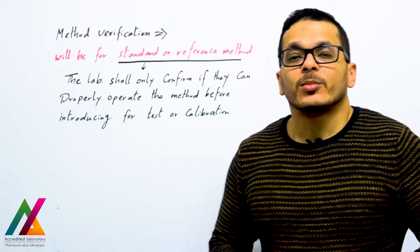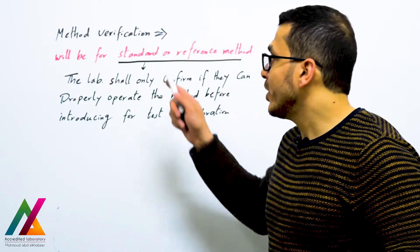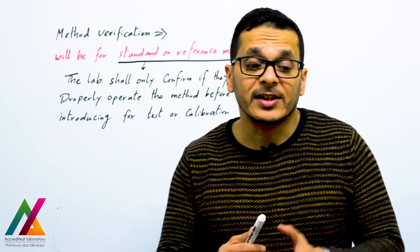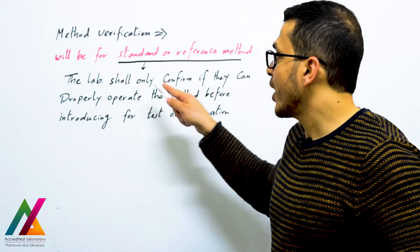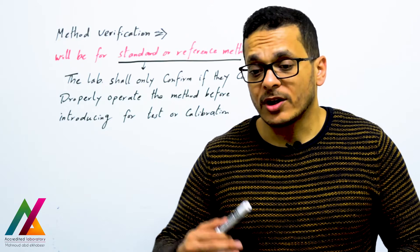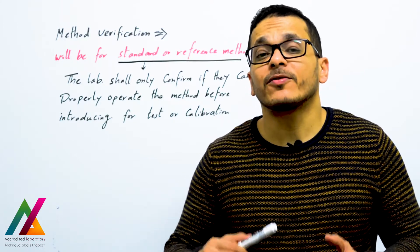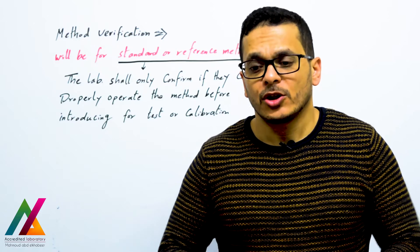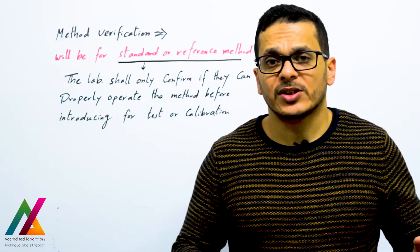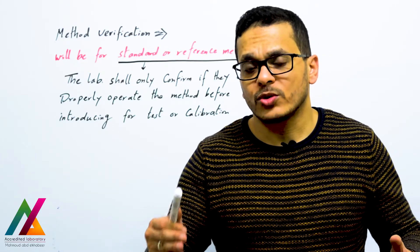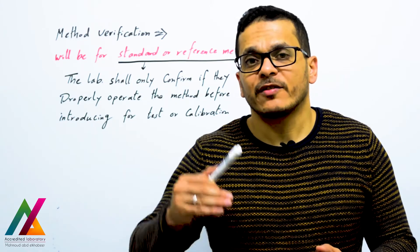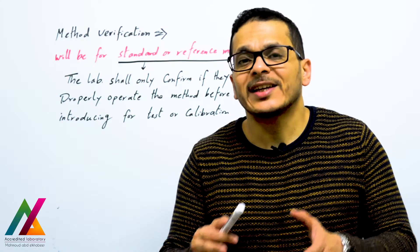Method verification applies only to standard or reference methods. If you have a reference method to analyze your target analytes in your matrix, the lab shall only confirm that they can properly operate this method before introducing it for test or calibration. You should verify that you can apply the same performance parameters found in the method and achieve acceptance limits according to the reference method.